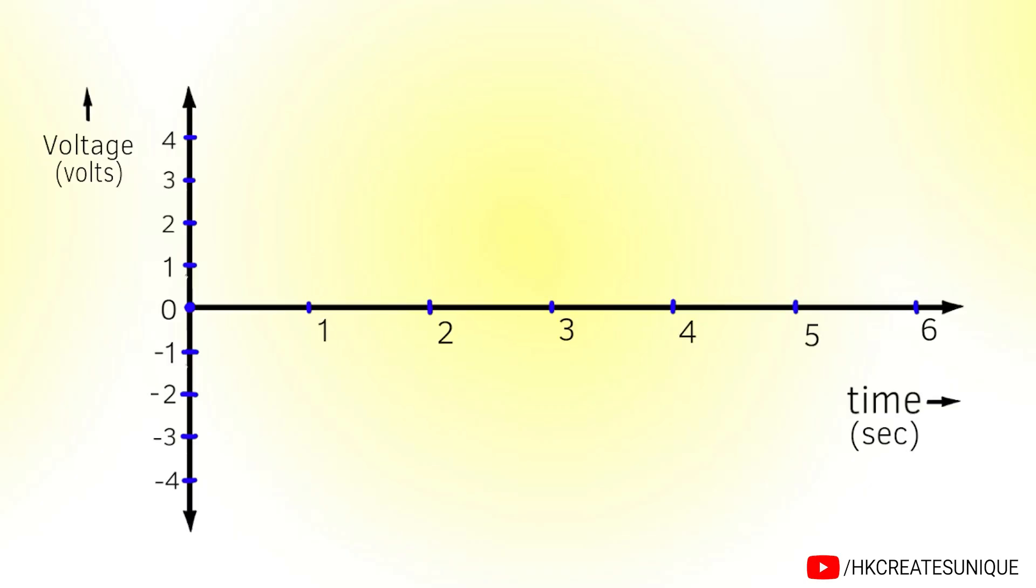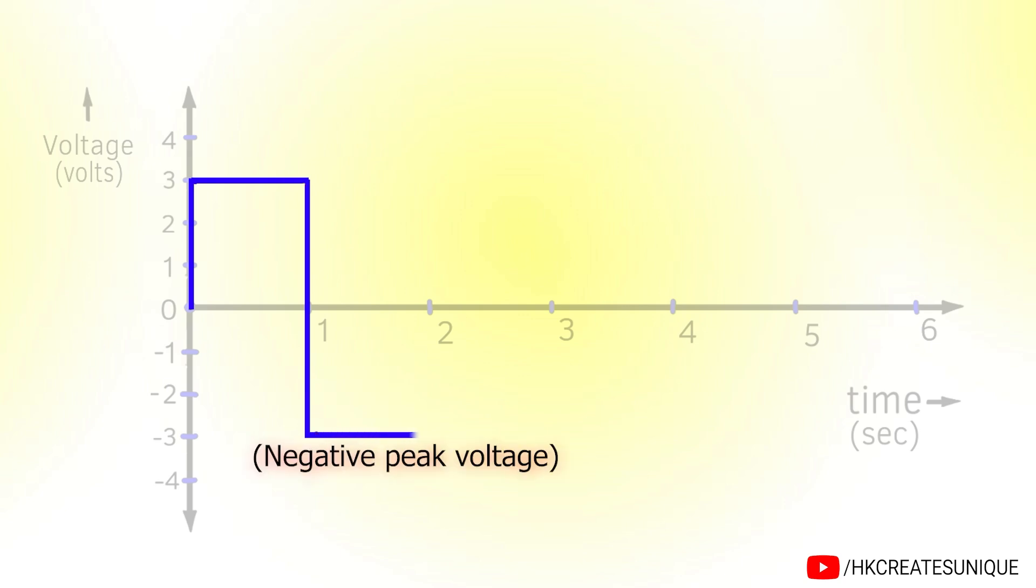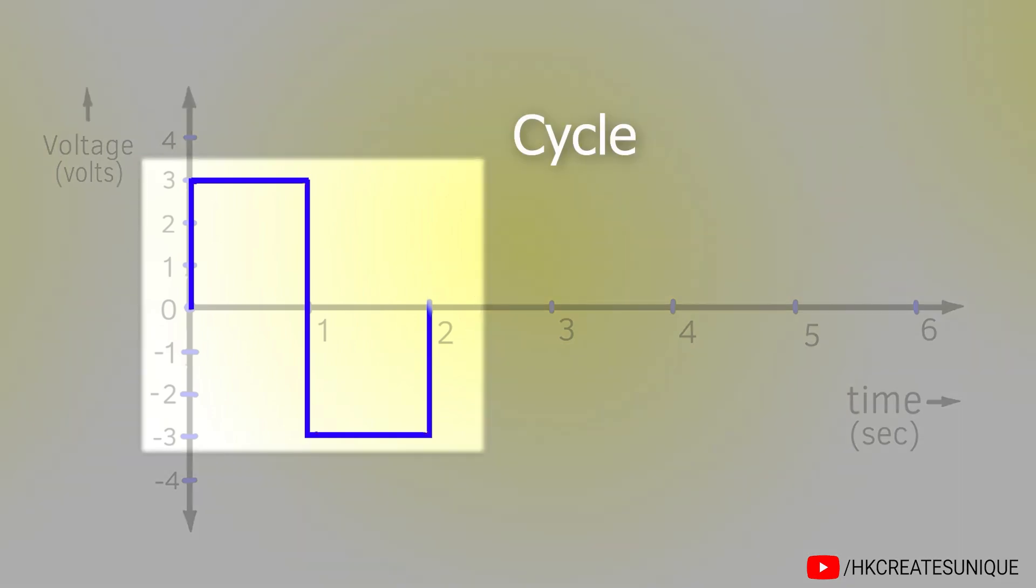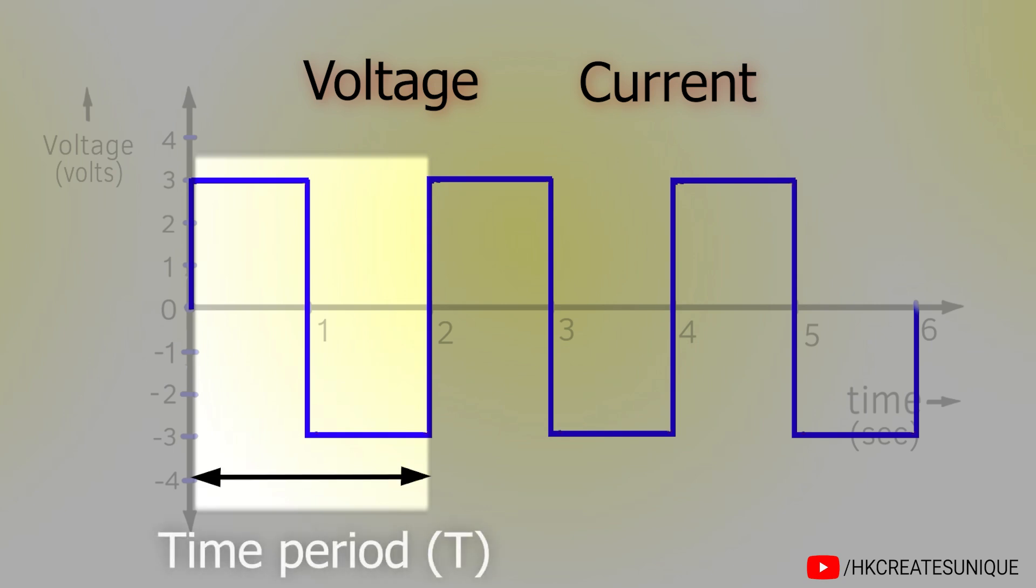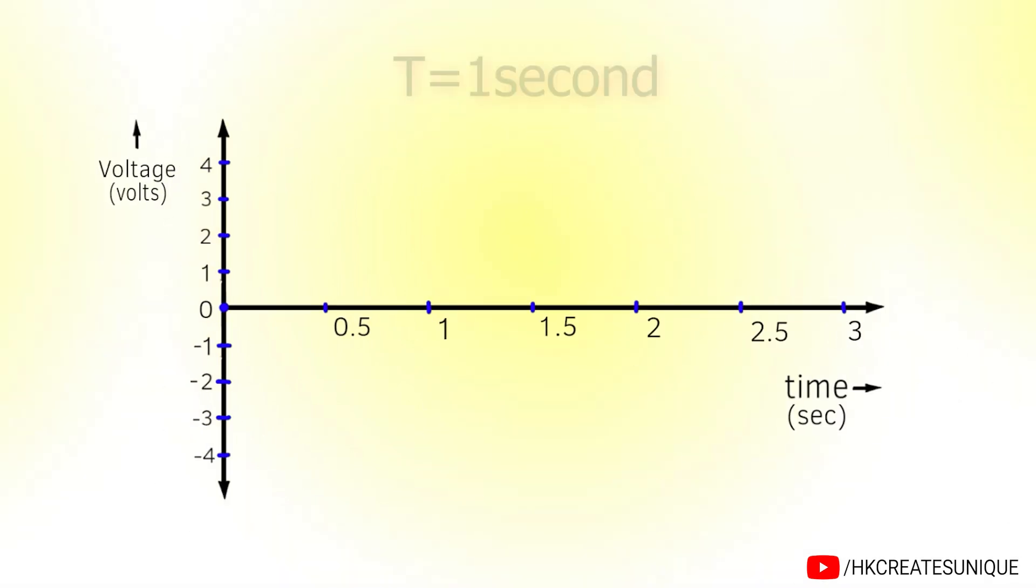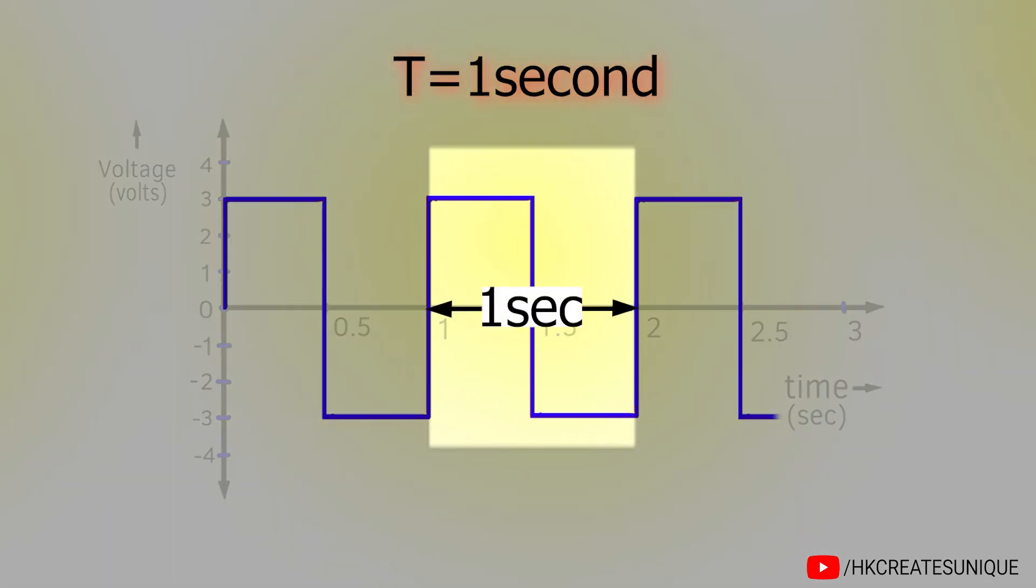AC voltage starts from 0 volts, then it goes to highest positive voltage, also called positive peak voltage or amplitude. Then the voltage goes down to lowest voltage and again comes to 0 volts. This is called a cycle of an AC waveform because after this, the cycle repeats again and again. The time it takes for a voltage or current to complete one cycle is called time period. This is a one second time period alternating current because each cycle takes one second to complete.